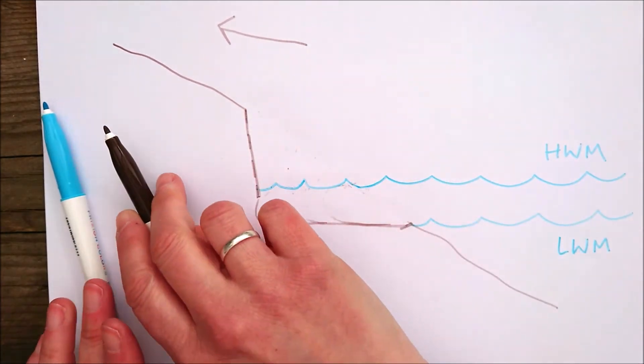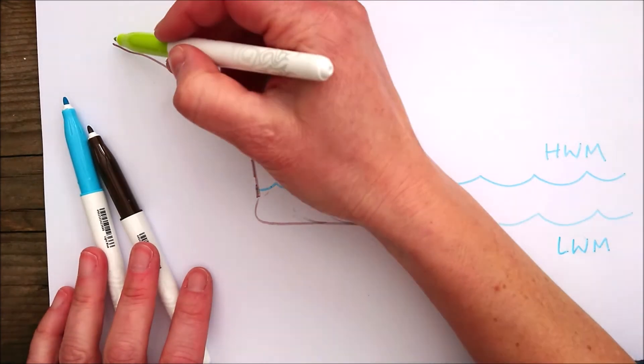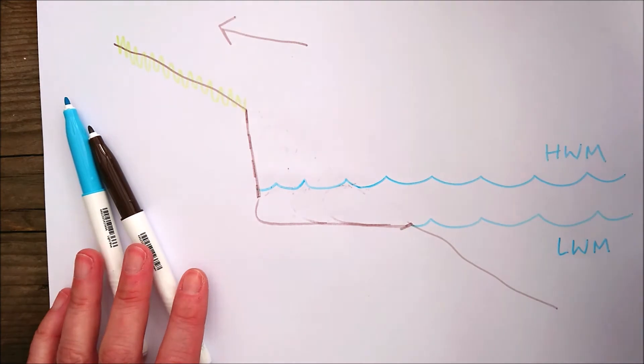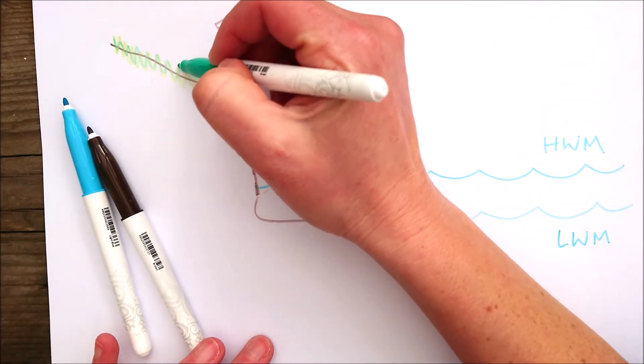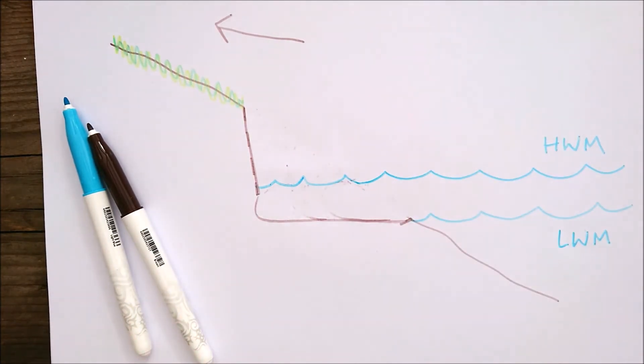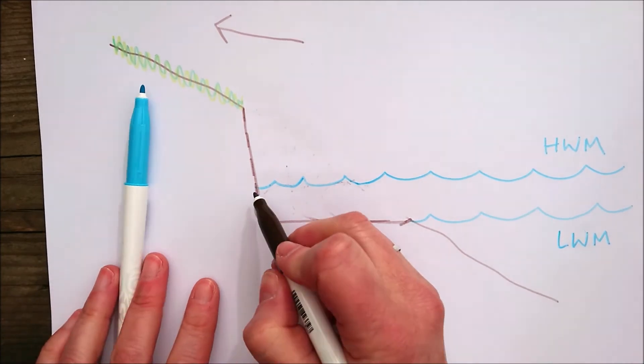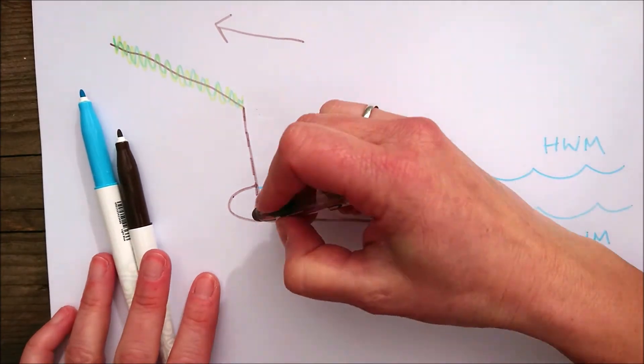On any bits of cliff that haven't recently eroded, you will get vegetation growth. That's why at the tops of cliffs you can see vegetation, and on the cliff face itself where it's recently fallen you don't get that vegetation. This process continues again and again and again.